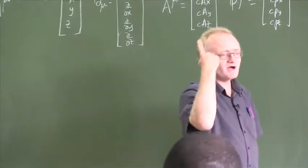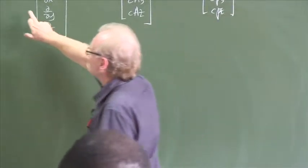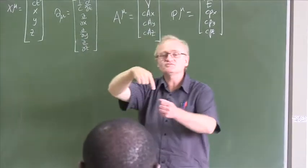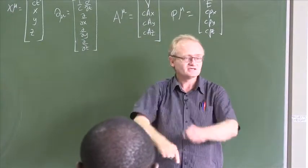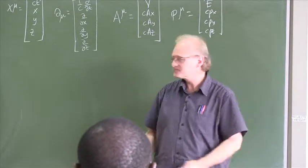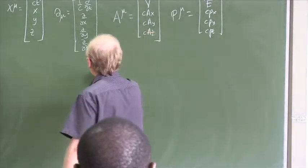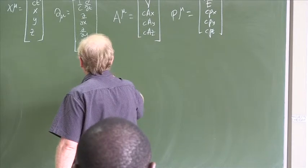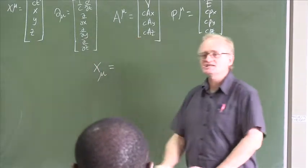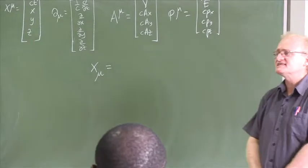There is one exception: whenever you have d mu, you always define that with the index down. So watch out for that. Now, if we wanted to get x mu with the index down, can anyone remind me what x mu with the index down is?